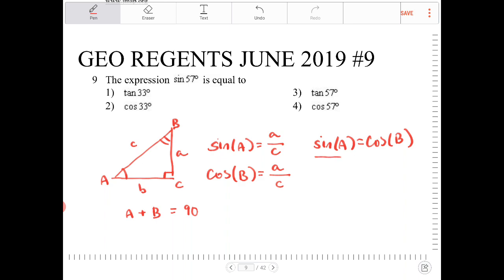So in order for this identity to hold true, A and B must add up to 90. So if I have sine 57, what would that be equivalent to with cosine? Again, A and B must add up to 90. That would be 33. And that would be option 2.